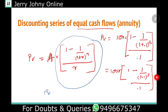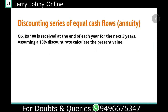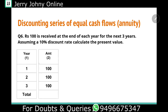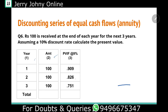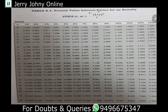This is your present value annuity interest factor. What we will be getting is Rs.100 into 2.486, that is equal to 248.6. This is the answer we got using the formula method. In the table value format, the values are 0.909, 0.826, and 0.751 — which also gives 248.6.